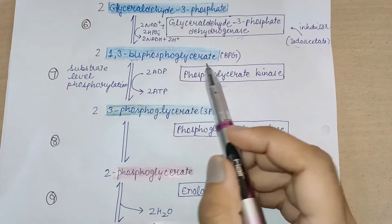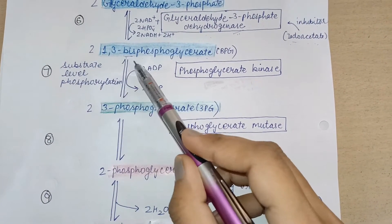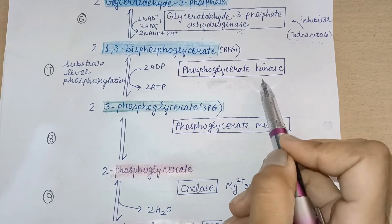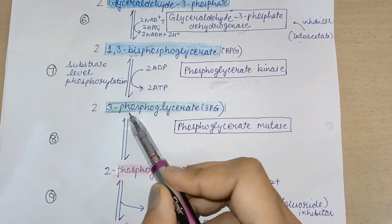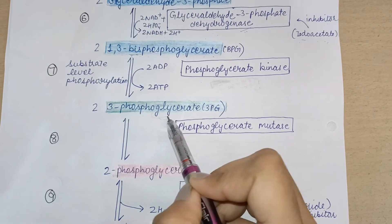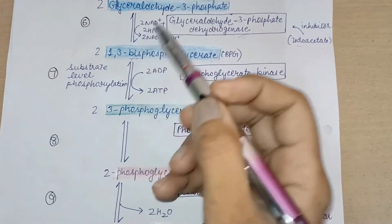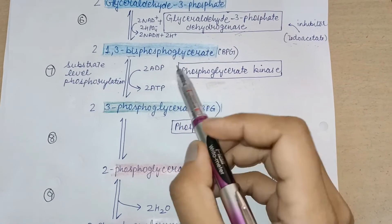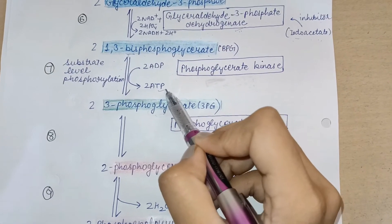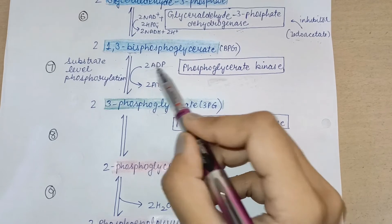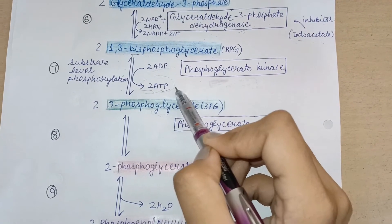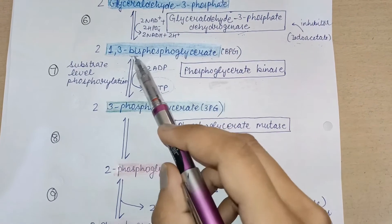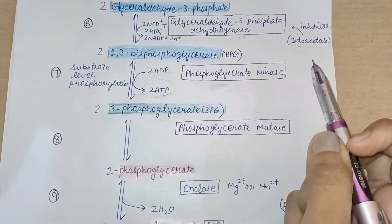After the formation of two molecules of 1,3-bisphosphoglycerate, with the help of the enzyme phosphoglycerate kinase, 3-phosphoglycerate is synthesized. This seventh step is known as substrate level phosphorylation because ATP is produced — two ADP molecules are converted into two ATP molecules as one phosphate is removed from each molecule of 1,3-bisphosphoglycerate.